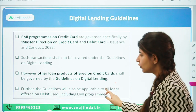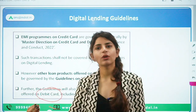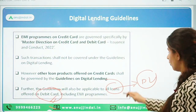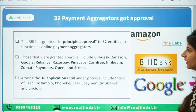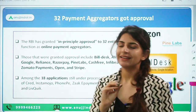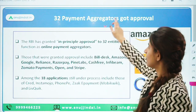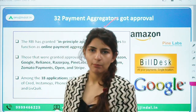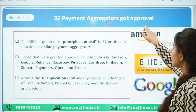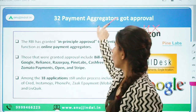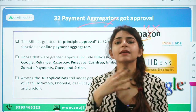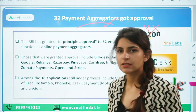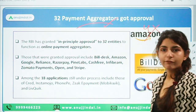If loans or EMI programs are offered by debit cards, these will be covered under the guidelines of digital lending. This was the RBI clarification on digital lending guidelines. Moving to the second news: 32 payment aggregators have received approval from RBI; some received in-principle approval or authorization. Four entities have been rejected — Paytm is one of them. Those rejected can reapply within 120 days, but until then cannot onboard any new merchant.